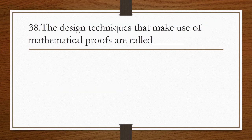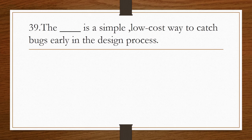The design techniques that make use of mathematical proofs are called formal technique. The blank is a simple low-cost way to catch bugs early in the design process. Answer is design review.